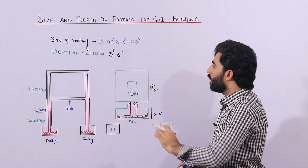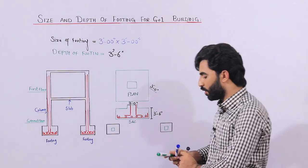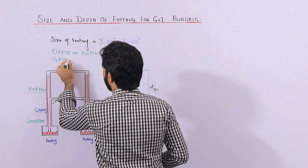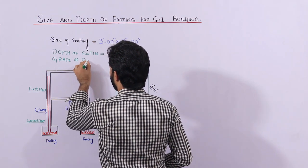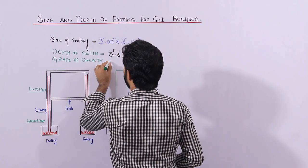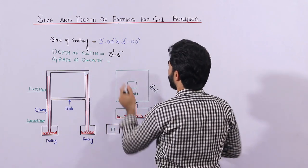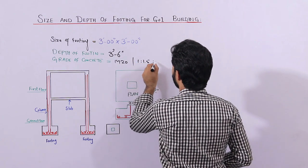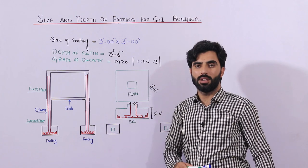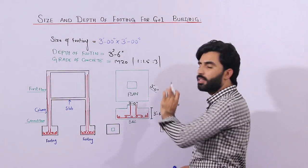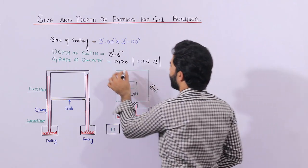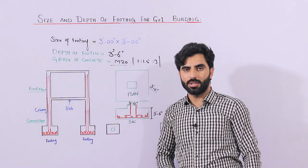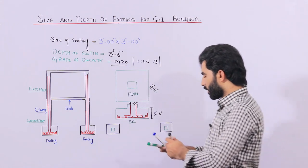Now, what should be the ratio of concrete for the construction of footing — the grade of concrete? You can use M20 grade concrete, which has a ratio of 1:1.5:3, where one part is cement, 1.5 parts are sand, and three parts are aggregate. M20 means M is mix and 20 is the characteristic strength of concrete after 28 days.